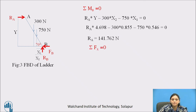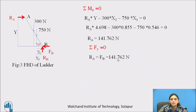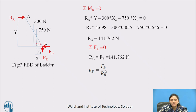Using the third equilibrium equation — summation of Fx equals zero — Ra and FB are in the X direction and must be equal. So FB = Ra = 141.762 Newton. The coefficient of friction mu_b equals FB divided by RB. Substituting the values, mu_b = 141.762 / 1050 = 0.135.